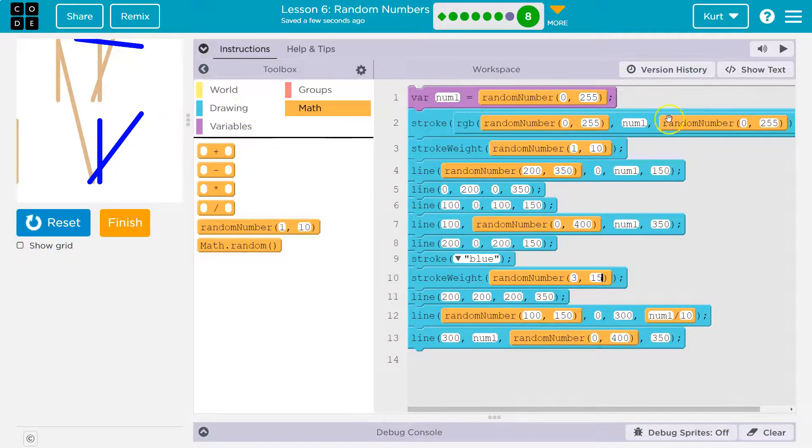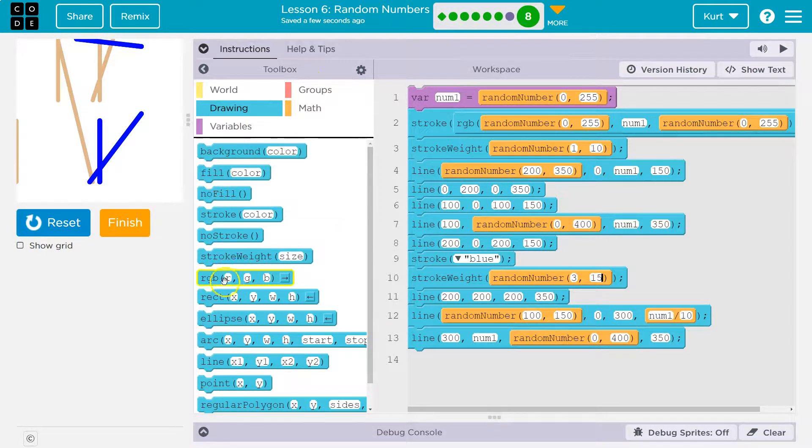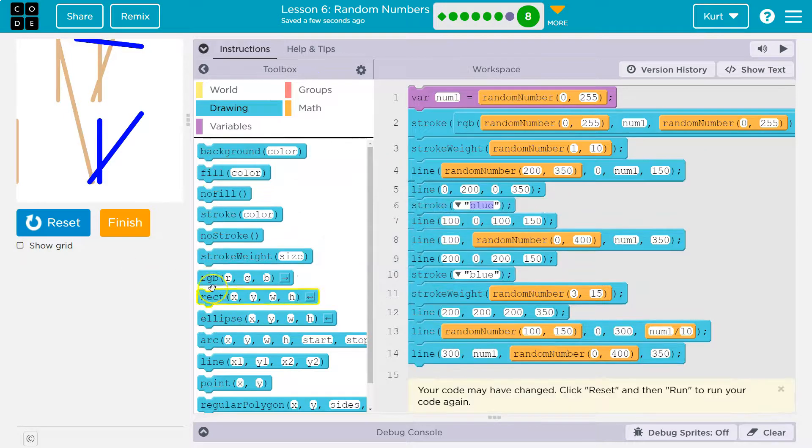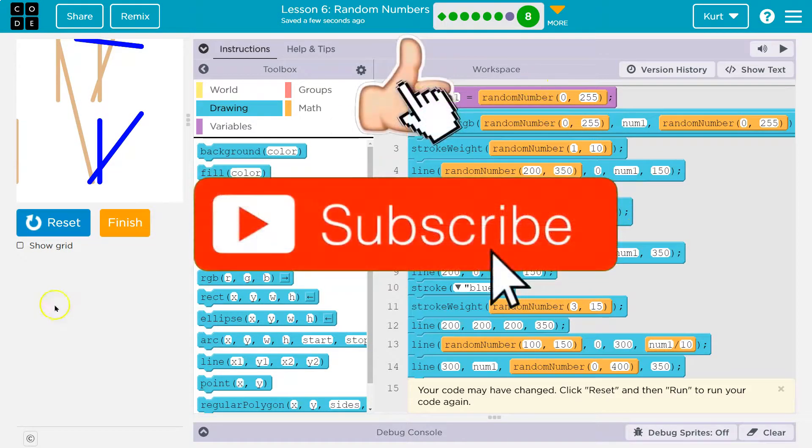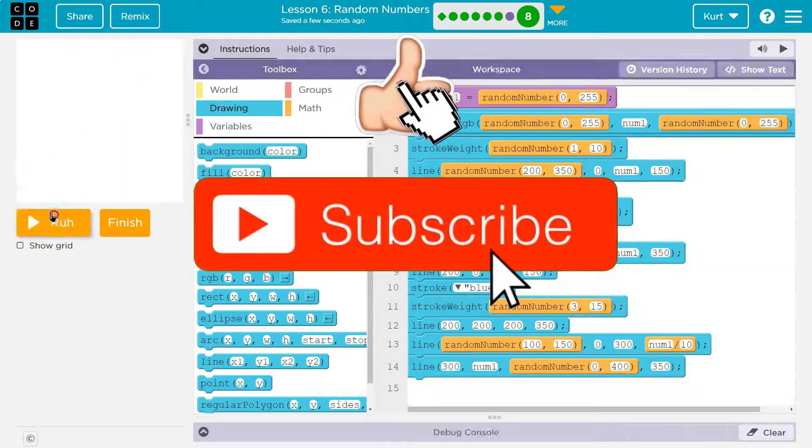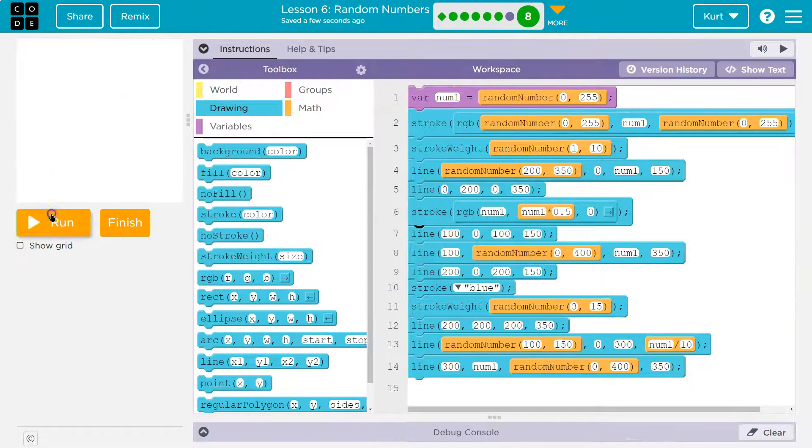I love this. And so now we can do another random color if we want. Which I do. Stroke color. RGB. And I'm going to do num1. Then I'm going to do num1 and 0. And since I know it's 0 to 255, I could do something like num1 times 0.5. So that will always be half of what num1 is.